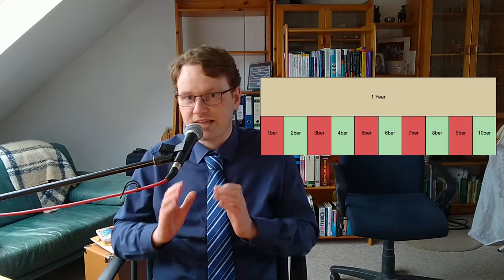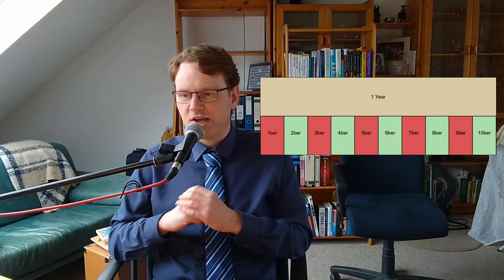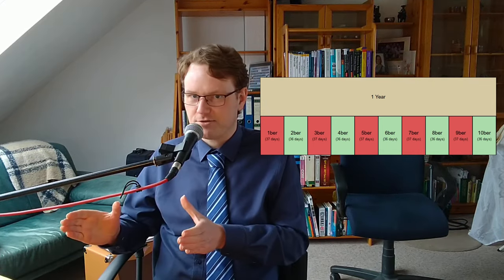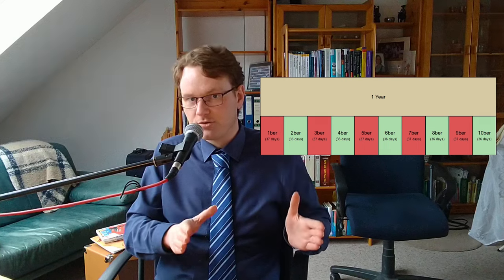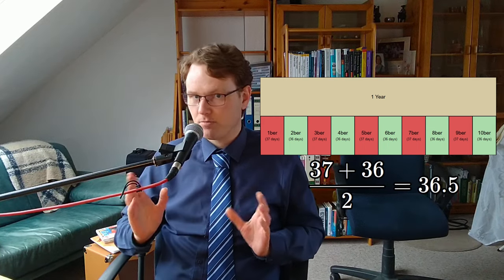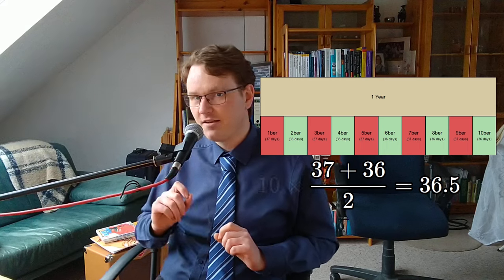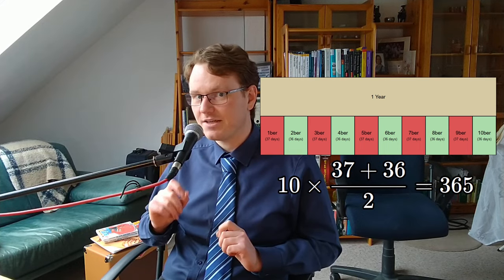This calendar system of having 10 months was rather sensible. In each month, they'd alternate between 37 and 36 days. This averages out to 36 and a half days per month, and for 10 months, that's exactly 365 days in a year. Please ignore the leap day for now.